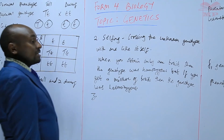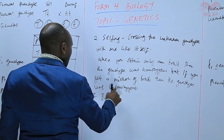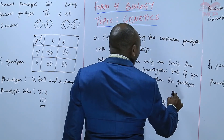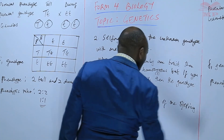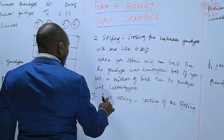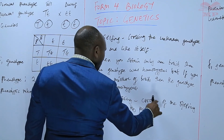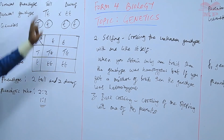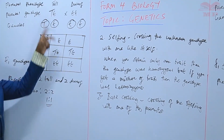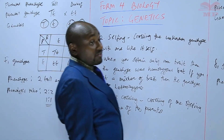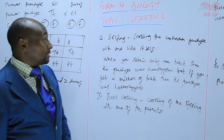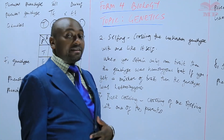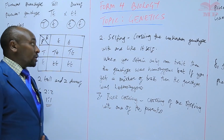The third way of determining the unknown genotype is backcrossing. Backcrossing is the crossing of one offspring — you take one offspring and cross it with one of the parents. So if I take an offspring and cross it with one of the parents, that is backcrossing — going back. So selfing, backcrossing, and crossing with the homozygous recessive are all ways of determining the unknown genotype. We basically refer to them as test crossing — we are testing to find out what the genotype is.